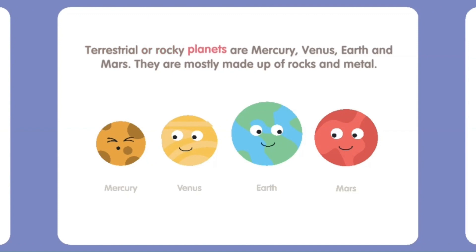Terrestrial or Rocky Planets are Mercury, Venus, Earth, and Mars. They are mostly made up of rocks and metal.